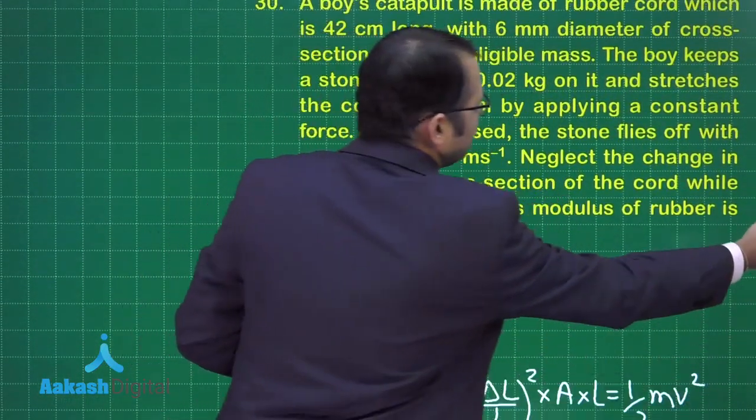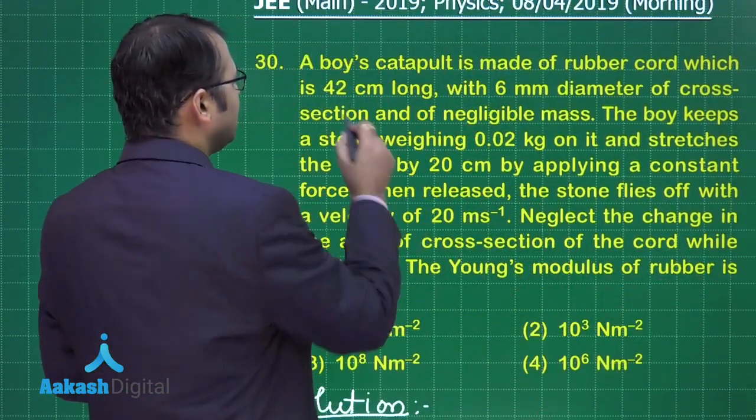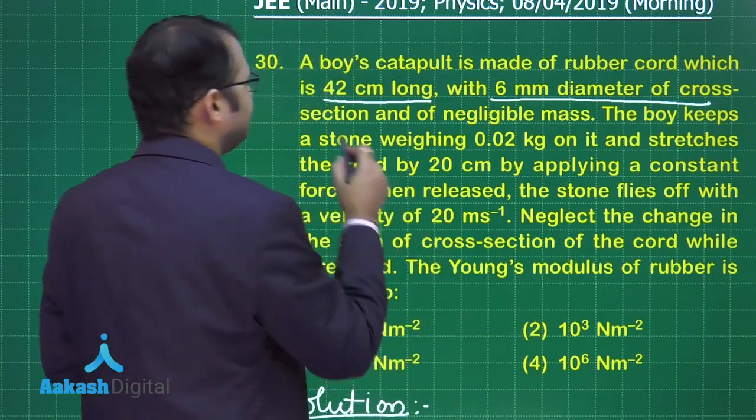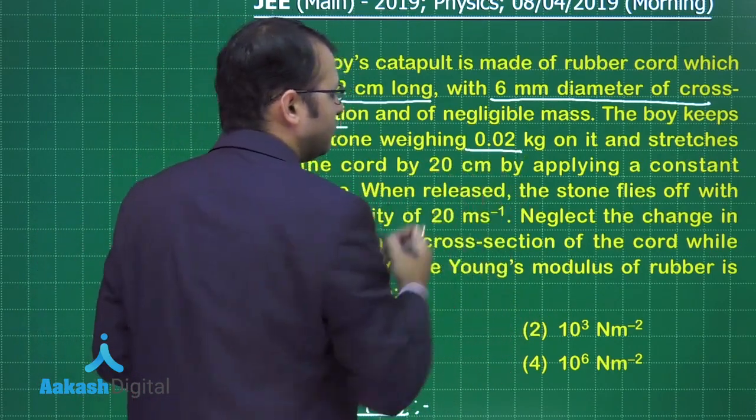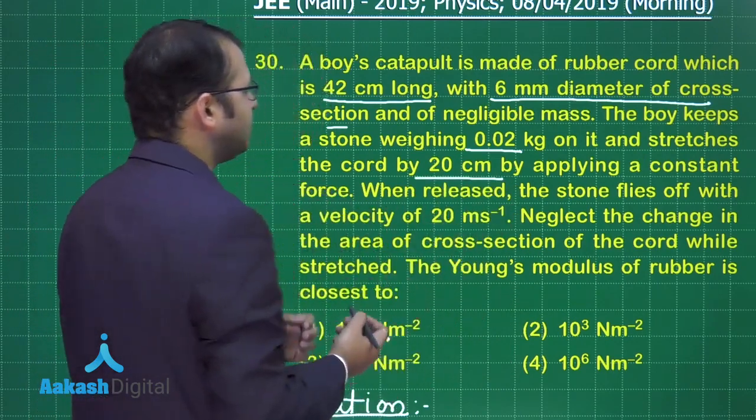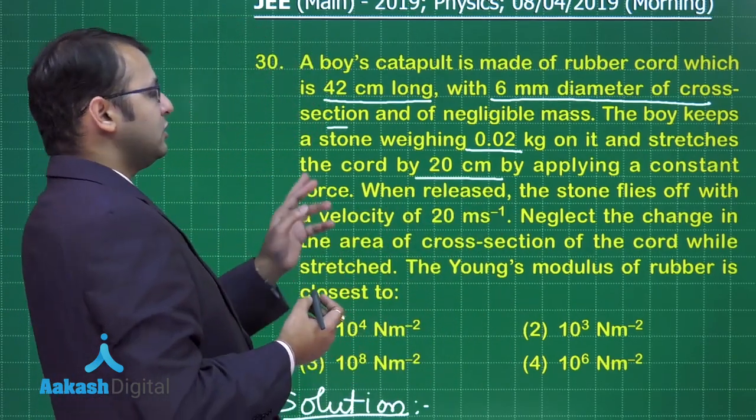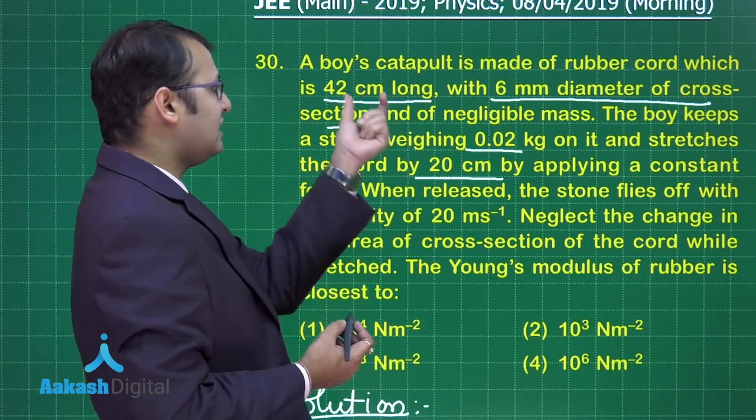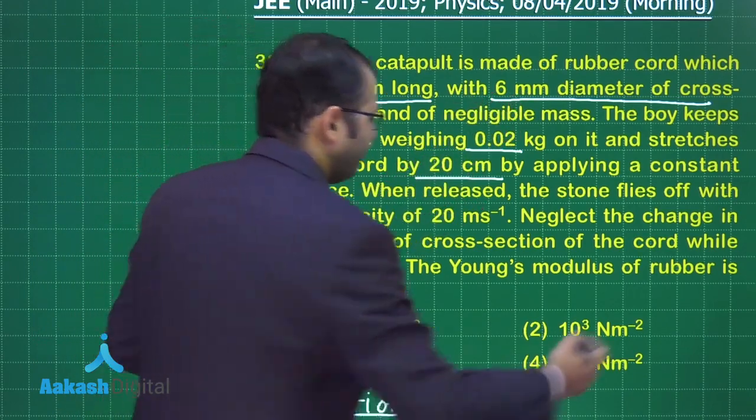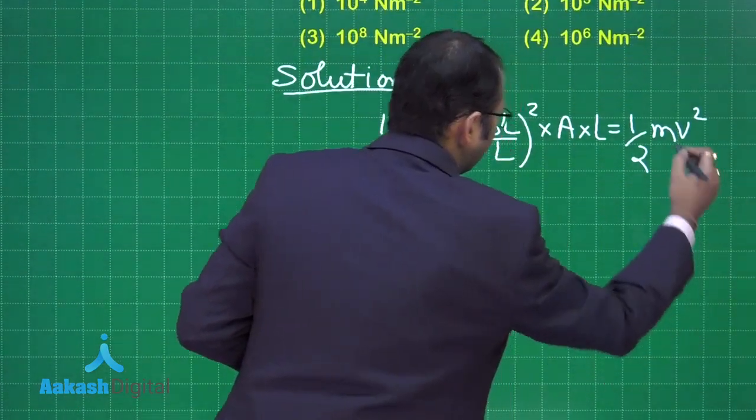Now we just have to put down the values. What is given to us? The length is this, the diameter of cross-section has been given to us, 0.02 kg is the mass of that stone, and the cord stretches by 20 centimeters. This is delta L, this is L, this is the diameter so we can find the area and then we just put down the values, this velocity has been given to us.